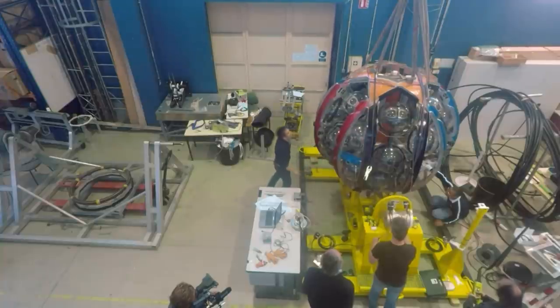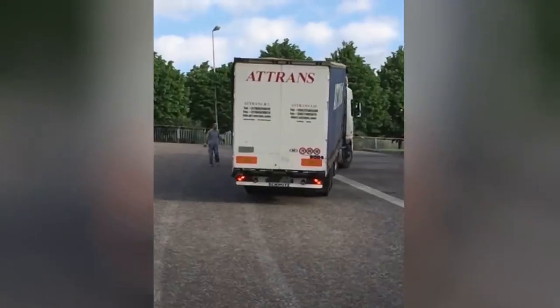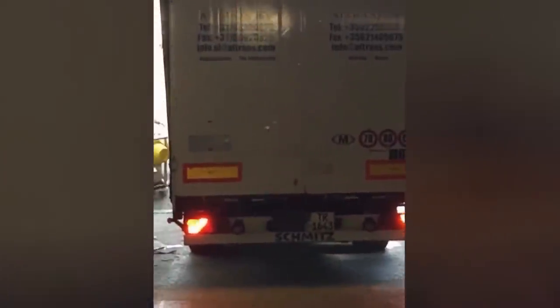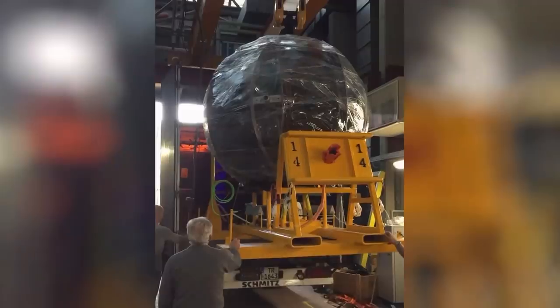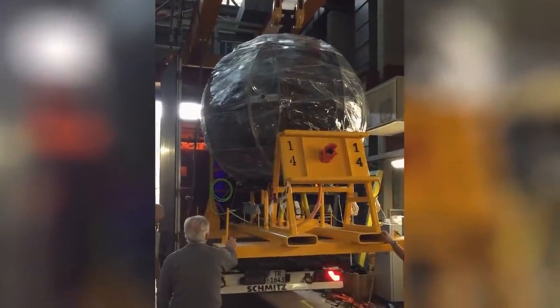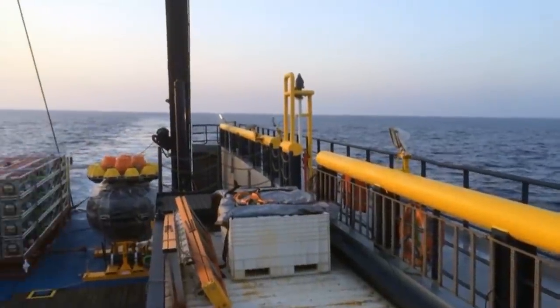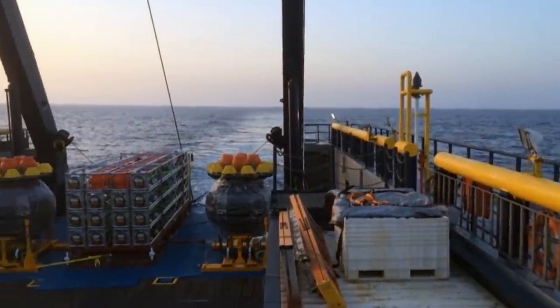Every action is carefully planned and tested several times. The scientists roll the string with the sensor spheres into a big ball. They have developed a special anchor to secure it on the seabed. The final step in the construction hall is to load the rolled-up string onto the yellow anchor. The first sensor chain is ready for shipping. Together with the anchor, it's loaded and sent off.